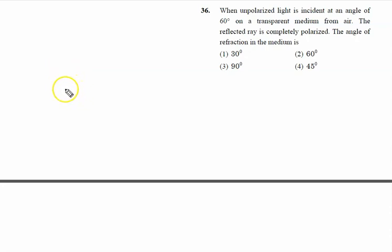When unpolarized light is incident at an angle of 60 degrees on a transparent medium from air - this is the unpolarized light, this is the symbol of unpolarized light - and strikes at an angle of 60 degrees on a transparent medium, the reflected ray is completely polarized.